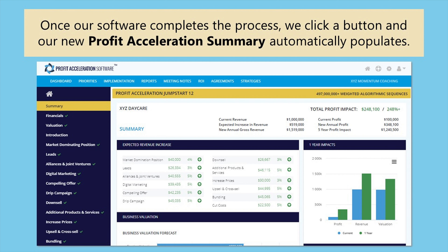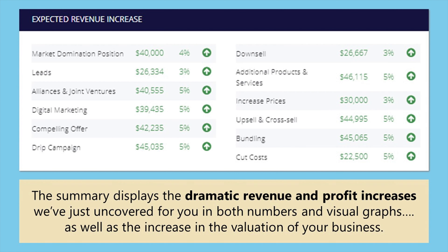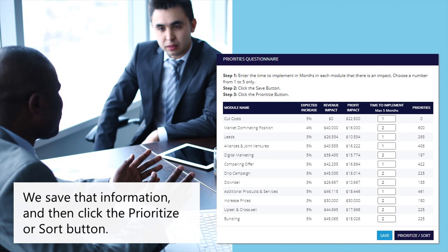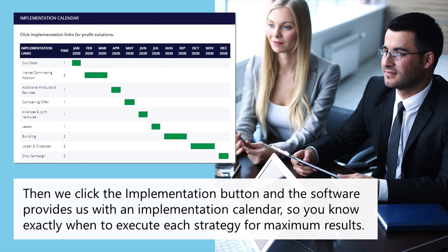Once our software completes the process, we click a button and our new profit acceleration summary automatically populates. The summary displays the dramatic revenue and profit increases we've uncovered in both numbers and visual graphs, as well as the increase in the valuation of your business. Next, we click the priorities button and assign a time to implement each breakthrough we uncovered. We save that information, then click the prioritize or sort button. Then we click the implementation button and the software provides us with an implementation calendar, so you know exactly when to execute each strategy for maximum results.